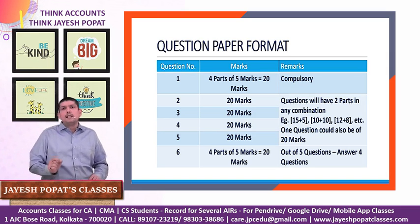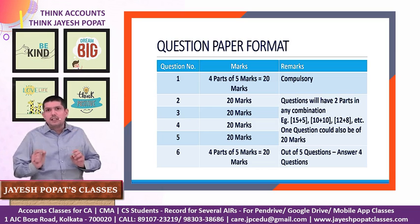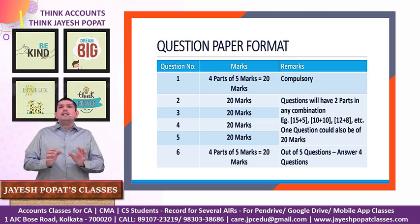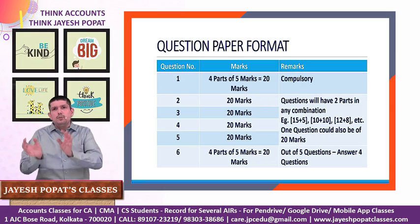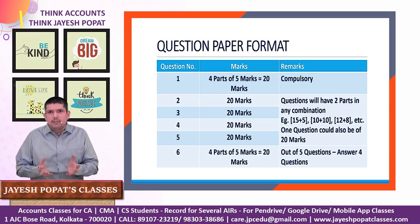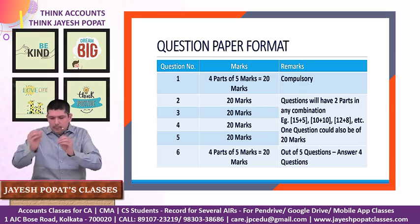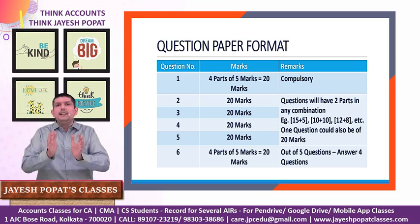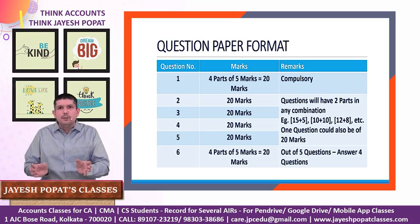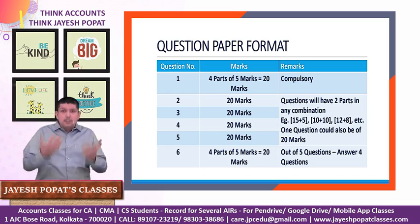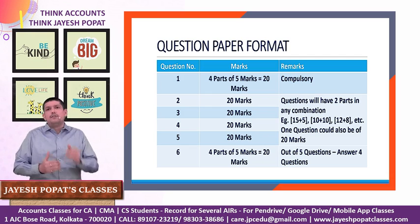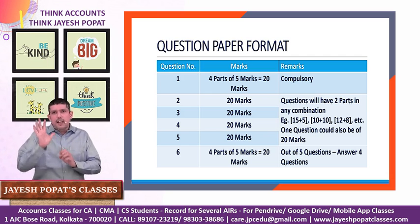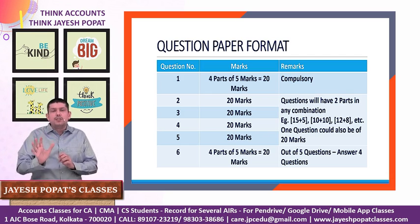Looking at the marking scheme: the first question has four subparts, all compulsory, five marks each, totalling 20 marks. Questions two through five can be in two parts — combinations like 15+5, 10+12, or 12+8 — or could be a single 20-mark question. There is no certainty about the exact breakup.